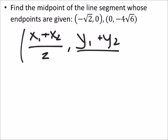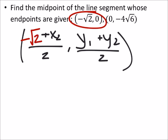So we'll say that this is our x1, y1 values. x1 here is negative square root of 2, and my y1 is 0.